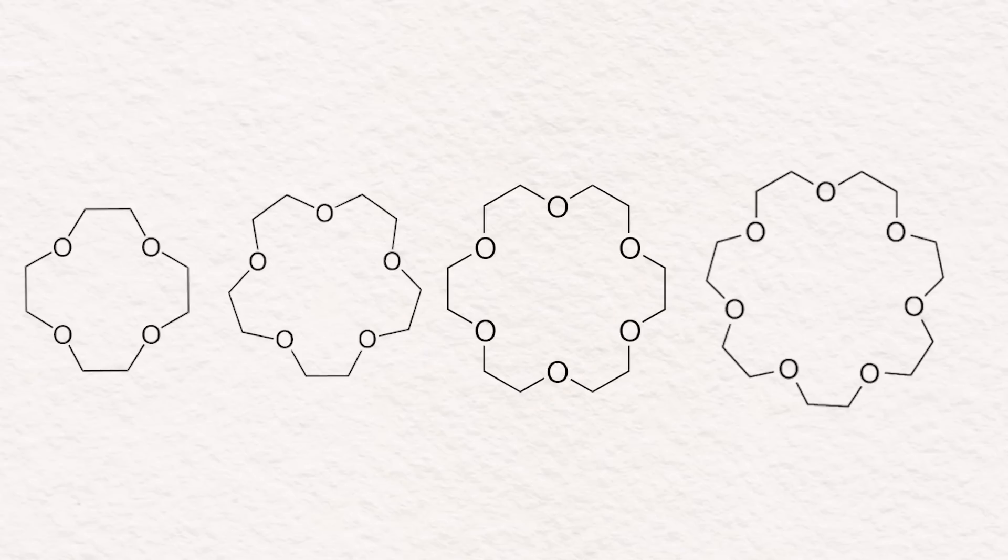Crown ethers have a very strong affinity to complex with alkali cations. While the small crowns can fit the tiny lithium and sodium ions, the large crowns manage to fit the chunky potassium and cesium. This makes the crown ethers interesting for chemistry.